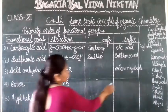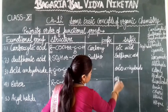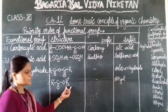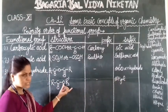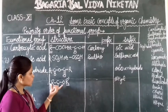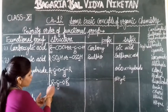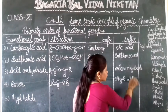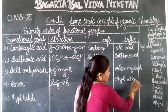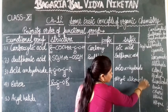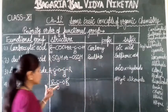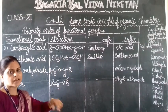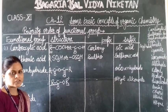For ester, the R attached to oxygen will be written in the alkyl format. The long chain is taken as the main part, and the suffix is 'alkyl alkanoate' — we write it in the alkyl format accordingly.